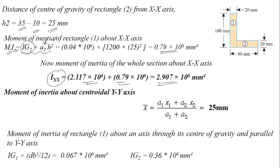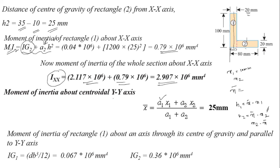Now calculate the moment of inertia about the YY axis. We need X-bar, since H1 = X-bar − X1 and H2 = X2 − X-bar. X1 = 20/2 = 10 mm (CG of section 1 from Y axis). X2 = 20 + 60/2 = 50 mm. Use X-bar formula to find the centroid.